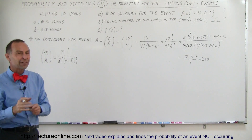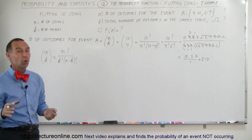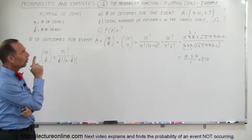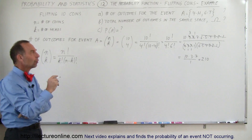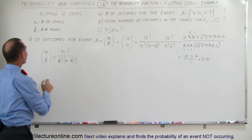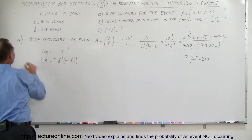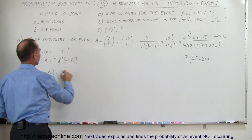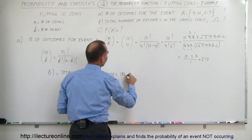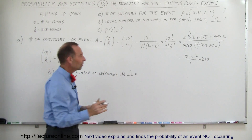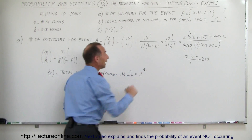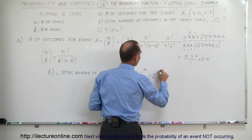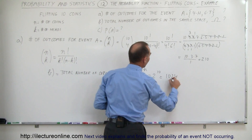There are 210 possibilities of getting 4 heads and 6 tails when you flip 10 coins. Now we need the total number of outcomes in the sample space when you flip 10 coins. The general equation for that is simply 2 to the nth power, where n is the number of coins. So in this case, that is equal to 2 to the 10th power, which is equal to 1024.